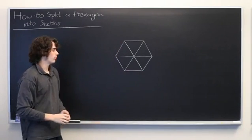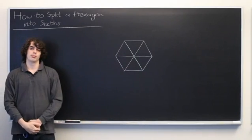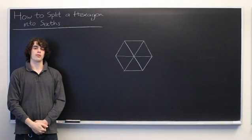And just like that, draw three lines and you've got six sixths. My name is Ryan Malloy, and we've just discussed how to divide a hexagon into sixths.